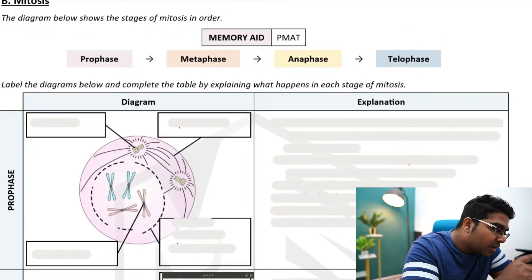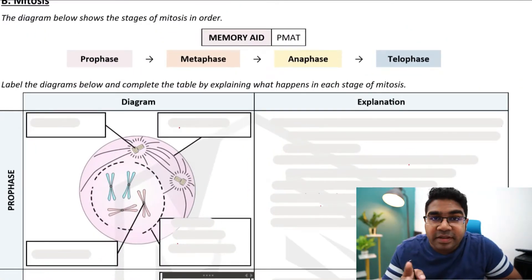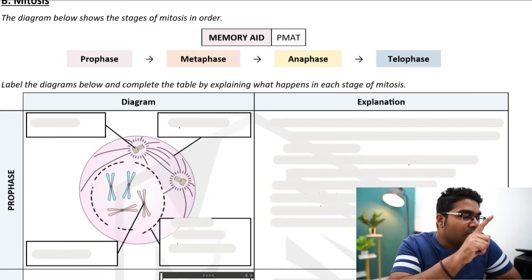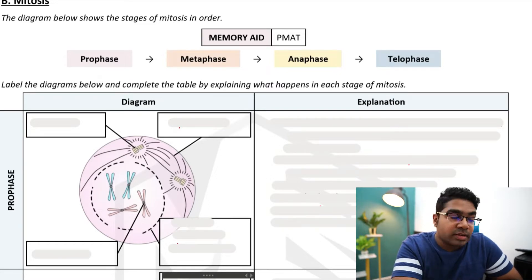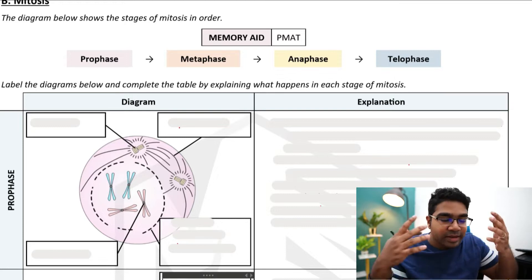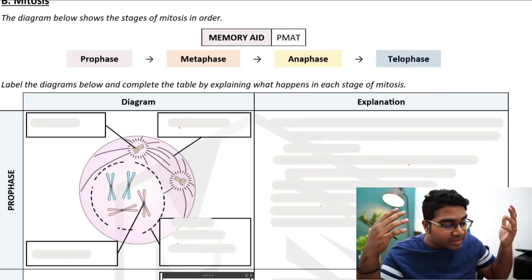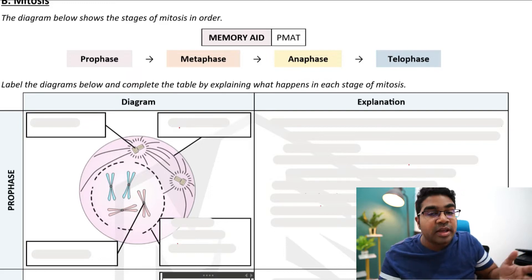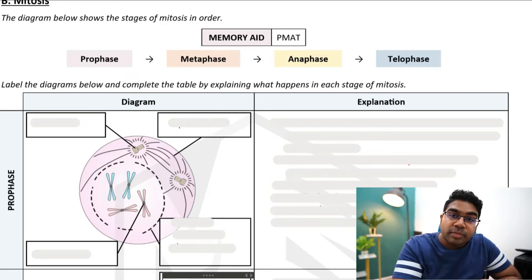Mitosis has four phases: prophase, metaphase, anaphase, and telophase. All these can be remembered using PMAT. It's very simple and it doesn't make any sense, but it's been more than 10 years since I learned this and I still remember it. So it works. Let's look at prophase first.